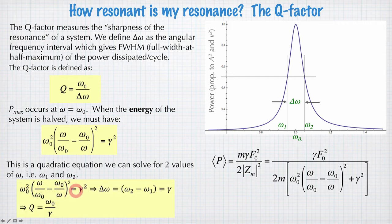So we solve it, and we find that the difference between ω₁ and ω₂, in fact, is given by γ. Which means that the quality factor, Q, is ω₀ divided by the damping, γ.